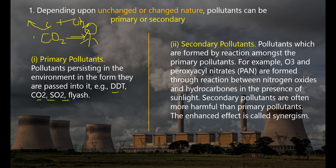Secondary pollutants are different. For example, O3 and Peroxyl Acetyl Nitrates, PAN. O3 is not a direct compound. These compounds are formed by the reaction of nitrogen oxides and hydrocarbons — hydrocarbons being CH compounds such as alkanes — in the presence of sunlight.